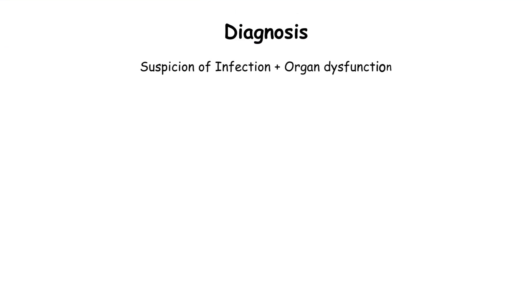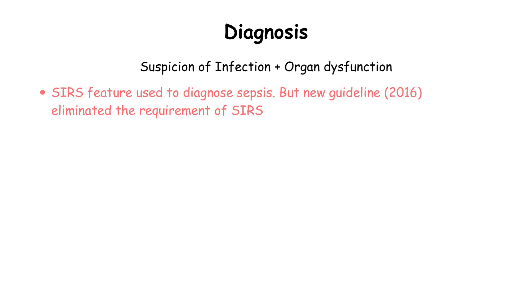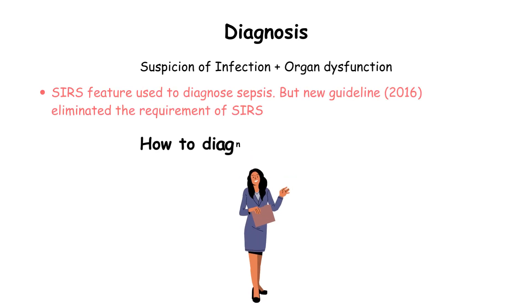Sepsis is a clinical diagnosis based on suspicion of infection and features of organ dysfunction. Previously, systemic inflammatory response syndrome (SIRS) features were used to diagnose sepsis. But in the new definitions, it eliminates the requirement for presence of SIRS to define sepsis.